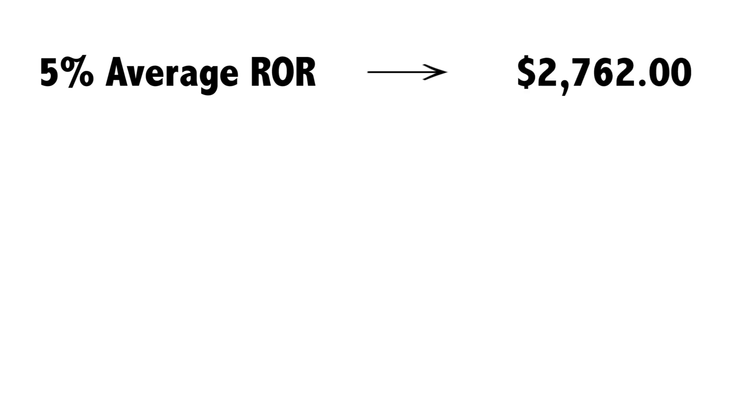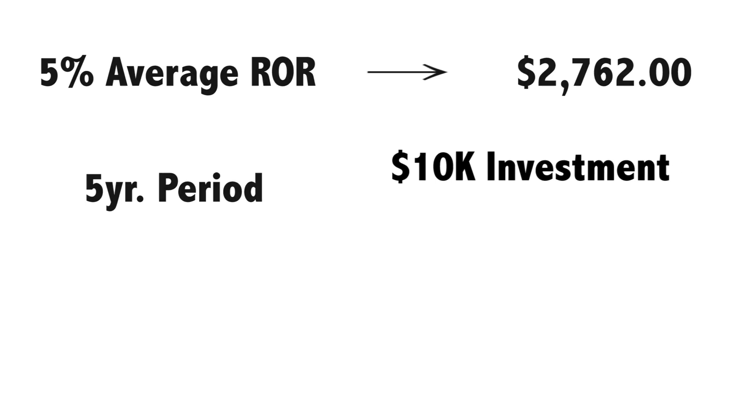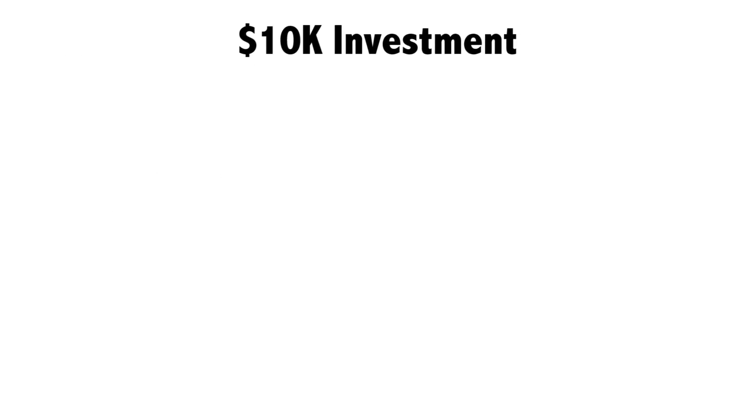Here's an example. A 5% average rate of return might lead you to believe that you'll earn $2,762 over a five-year period on a $10,000 investment. So you invest the $10,000.